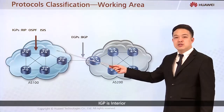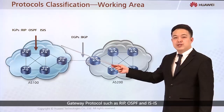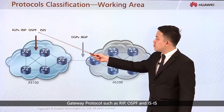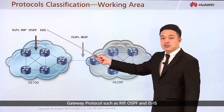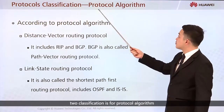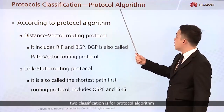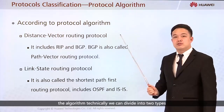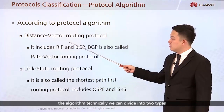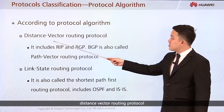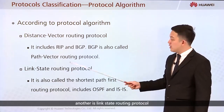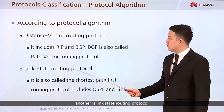Within one AS, we use IGP — Internal Gateway Protocol — such as RIP, OSPF, and IS-IS. Another way to classify protocols is by algorithm. The algorithm typically can be divided into two types: Distance Vector Routing Protocol and Link State Routing Protocol.